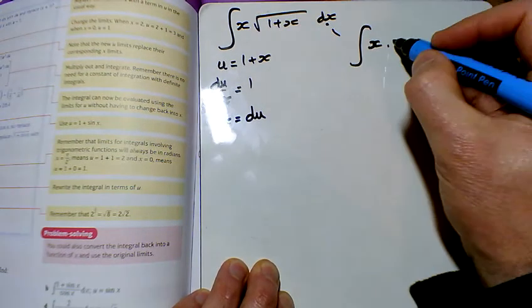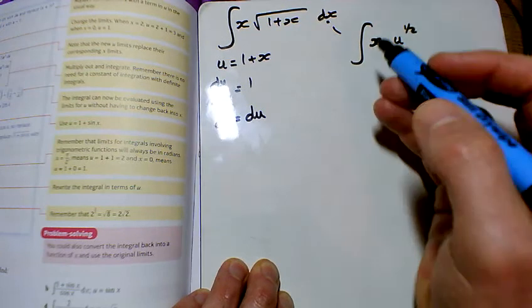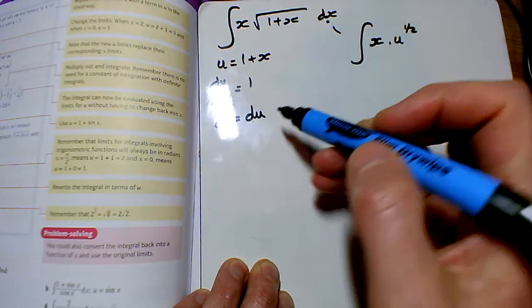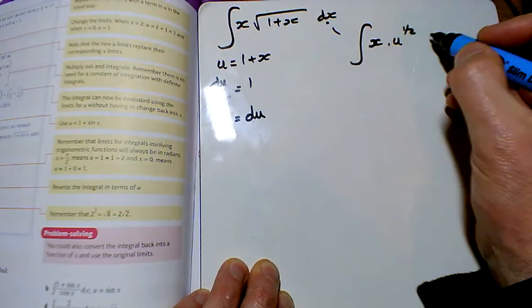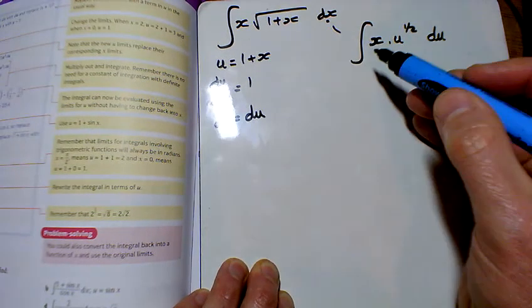Now in the last exercise, all the x's cancelled down, which is what we wanted. This time we've got a bit left over. We need to go back over here and say, well, what is x? And x is clearly just u take away 1.